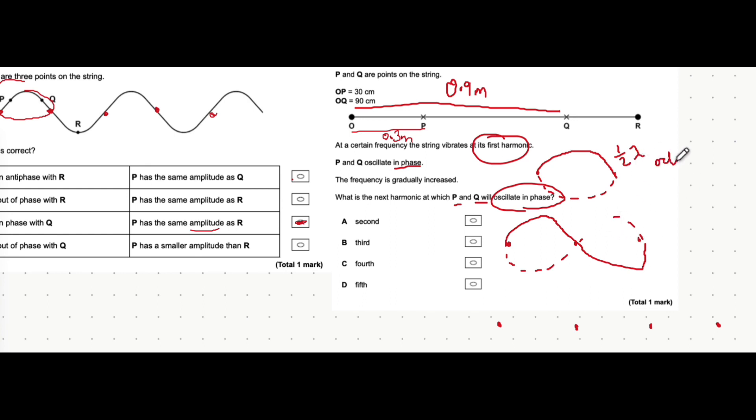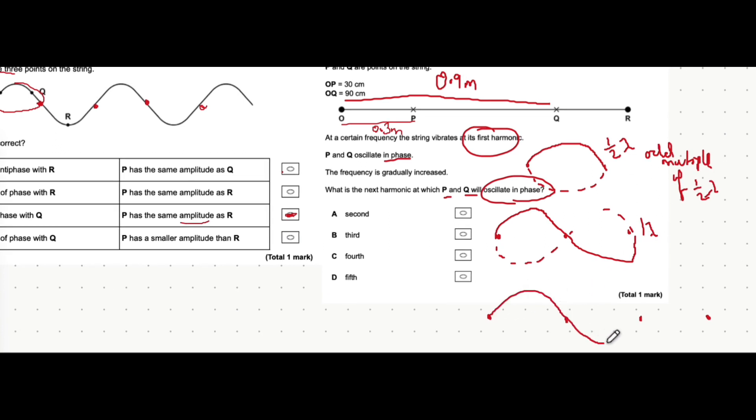This here is one whole wavelength. That's not an odd multiple of a half wavelength. That's an even multiple of a half wavelength because two over two lambda is one lambda. If instead we draw the next harmonic, the third harmonic that is,